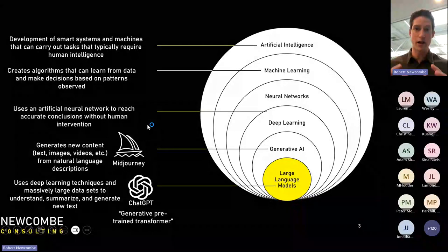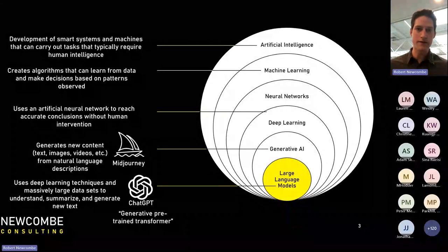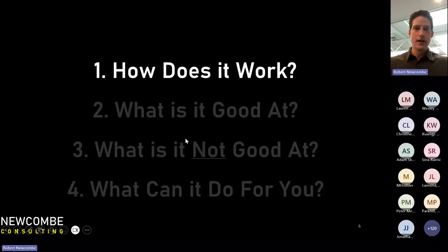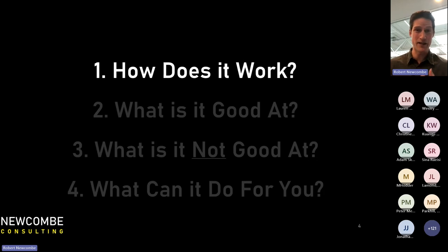What we're going to talk about today is mostly on the large language model scale — tools such as ChatGPT, Gemini, Copilot, Claude. These use deep learning techniques and massively large datasets to understand, summarize, and generate new text. The three things we'll cover are: how does it work, what is it good at and not good at, and what should it never replace humans at. At the end we'll talk about what it can do specifically for you, moving into a demo and Q&A.